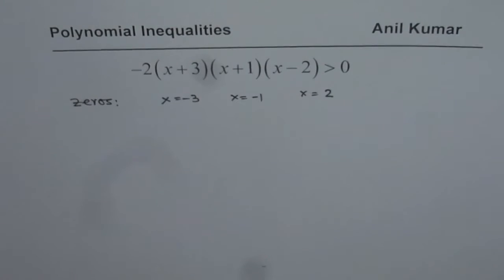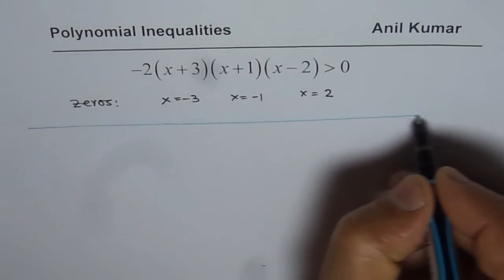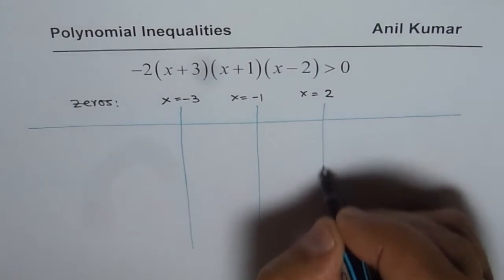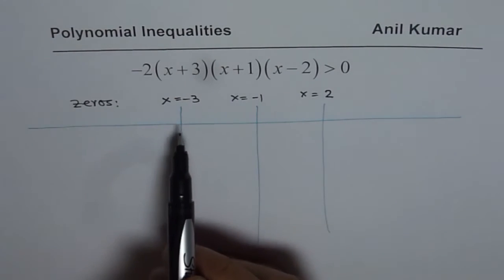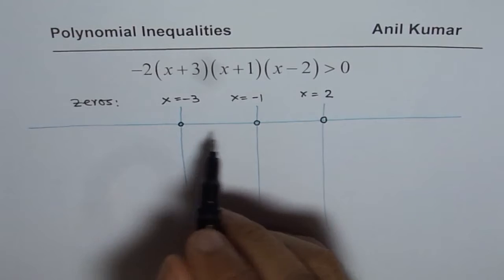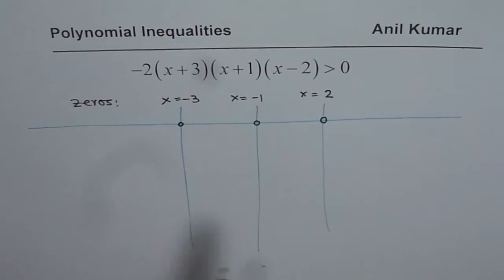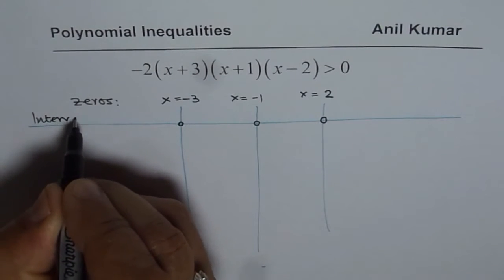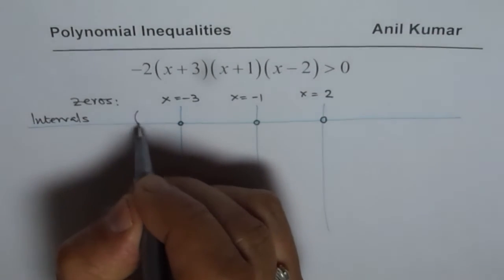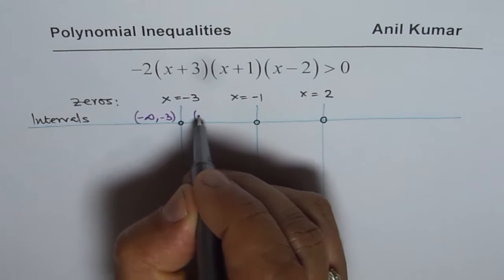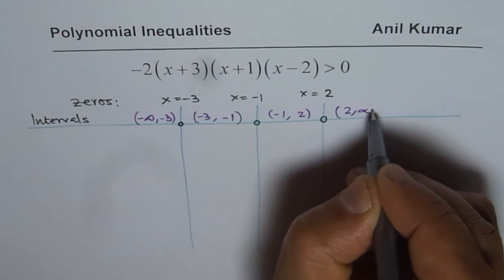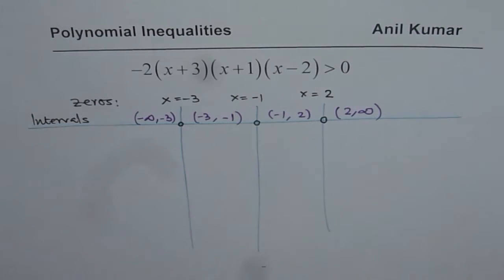Now on the xy plane, let me make a table also. I am drawing these lines just to show that these are zeros. So on the xy plane, if I have these zeros here, the xy plane is divided into four different intervals. From left to right, this interval is from minus infinity to minus 3, then from minus 3 to minus 1, then from minus 1 to 2, and from 2 to infinity. So three zeros means four intervals.